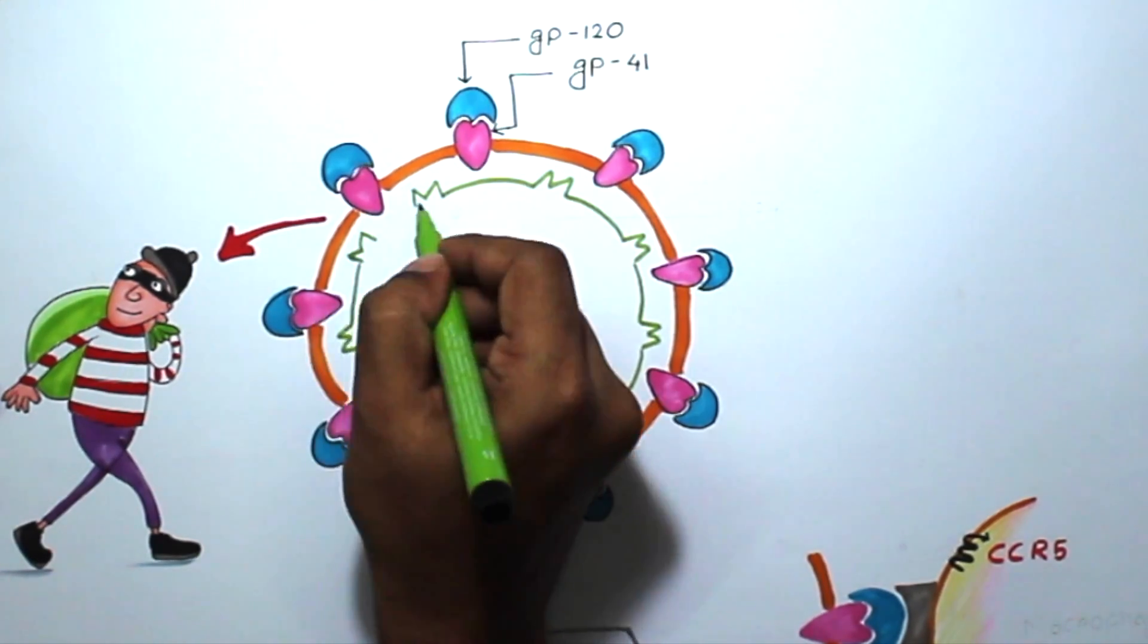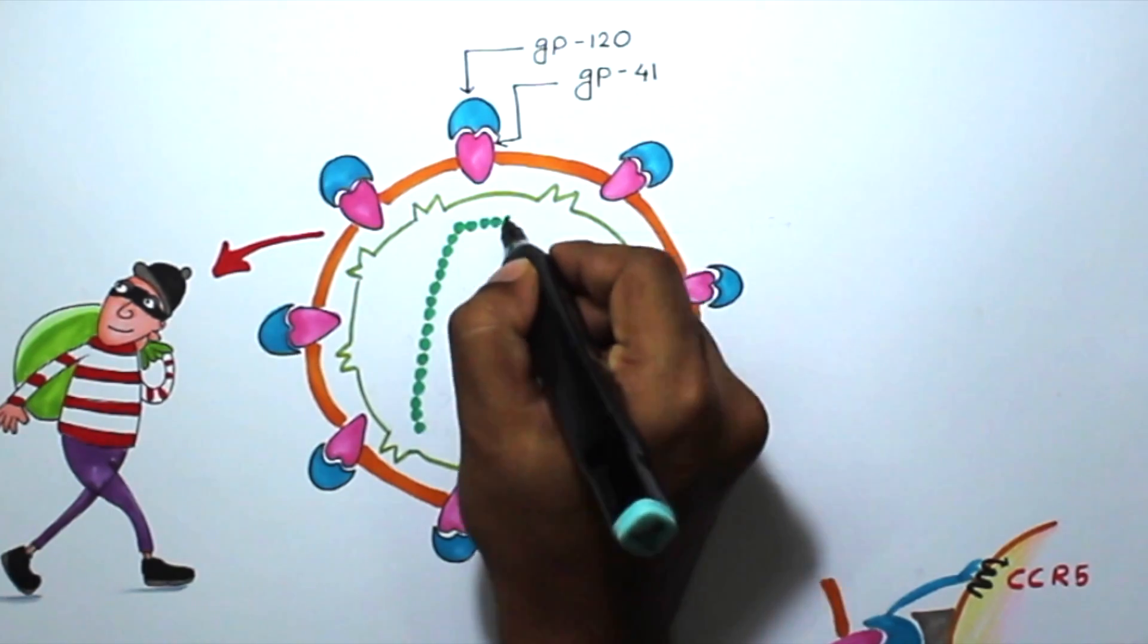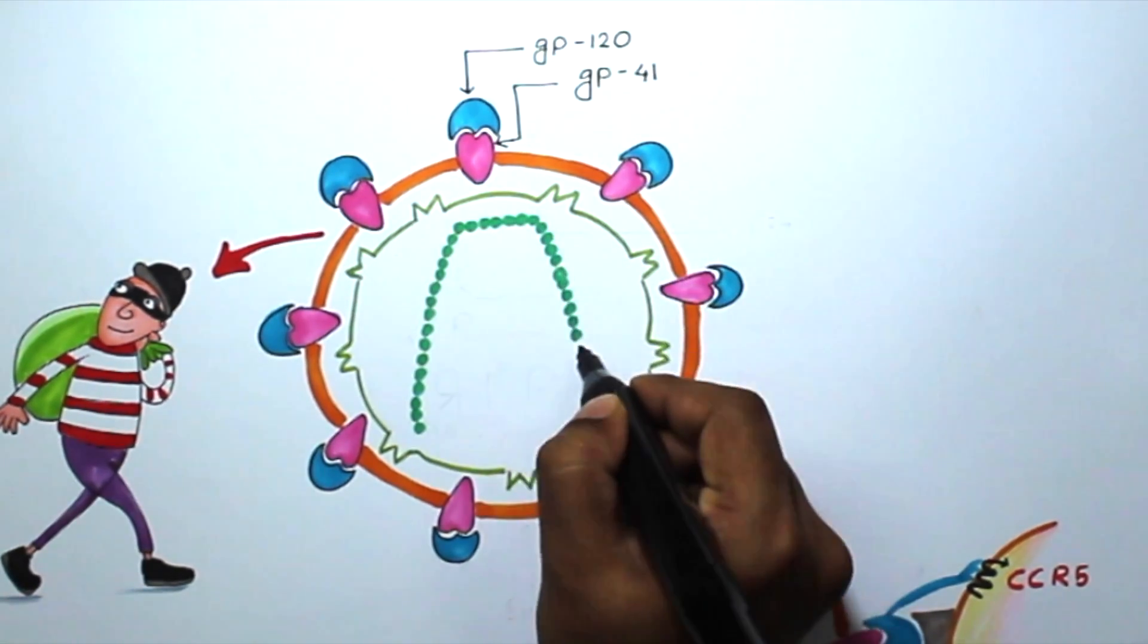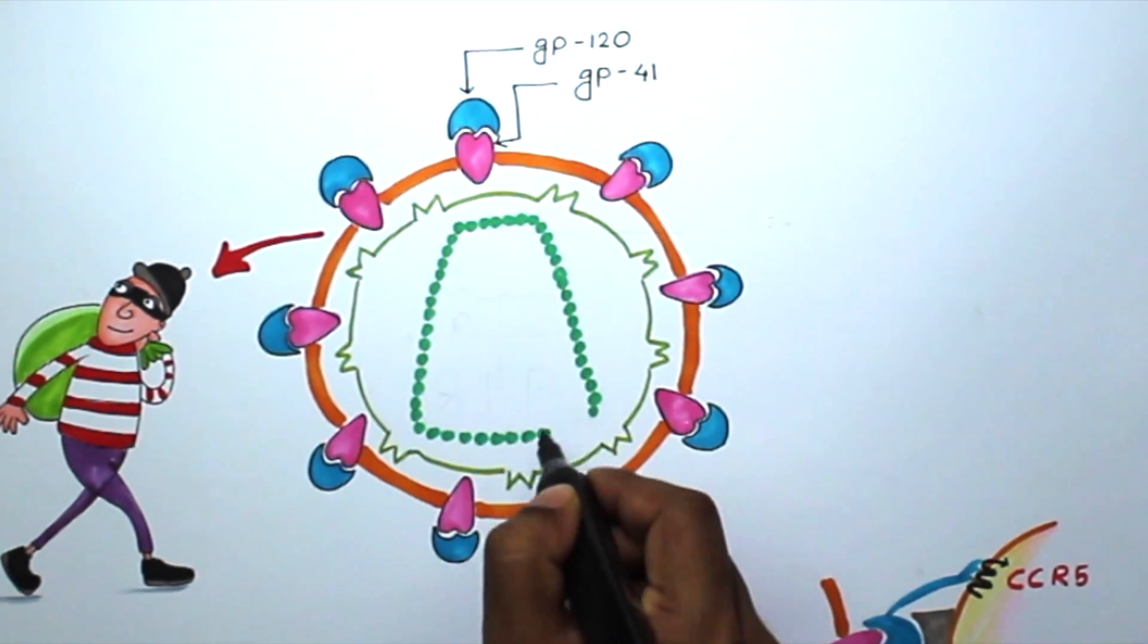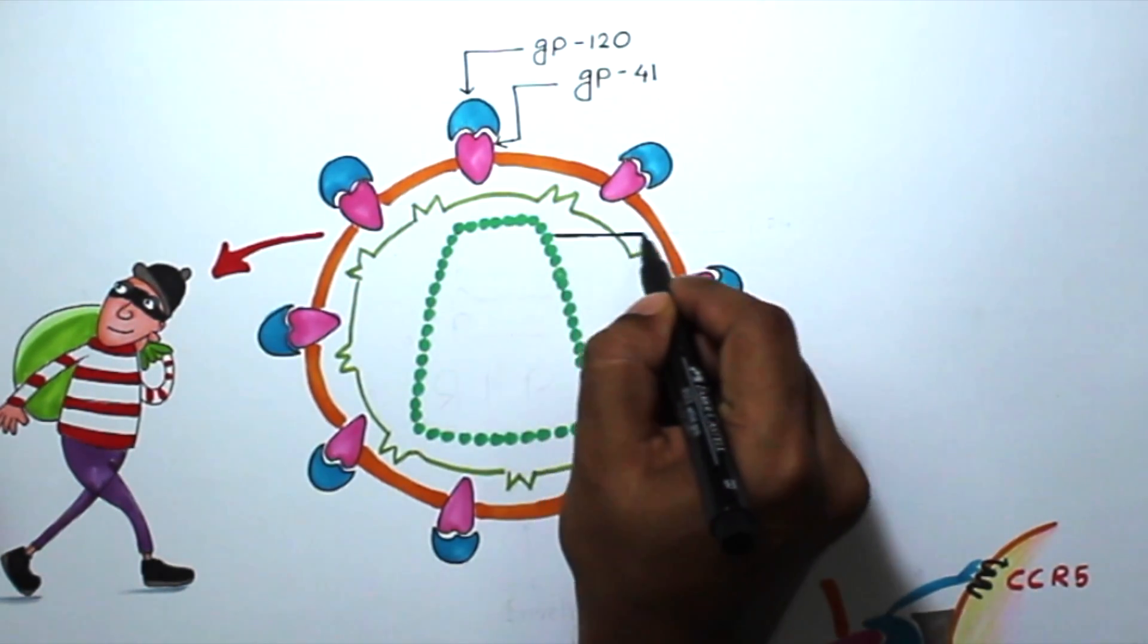And inside the matrix protein, there is the very important part of the virus, which is called the capsid. It is made up of p24 molecule. The p24 molecule has diagnostic importance.